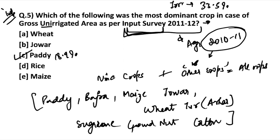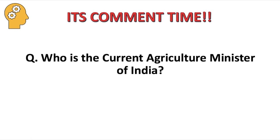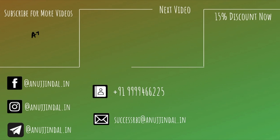You can find the PDF of this document in the description box — click the link and download it for information related to the agriculture census, which is very important for examination. Now, comment below: who is the current agriculture minister of India? Don't forget to subscribe to our channel Anuj Jindal and press the bell icon to receive notifications when new videos are posted. Thank you so much for watching.